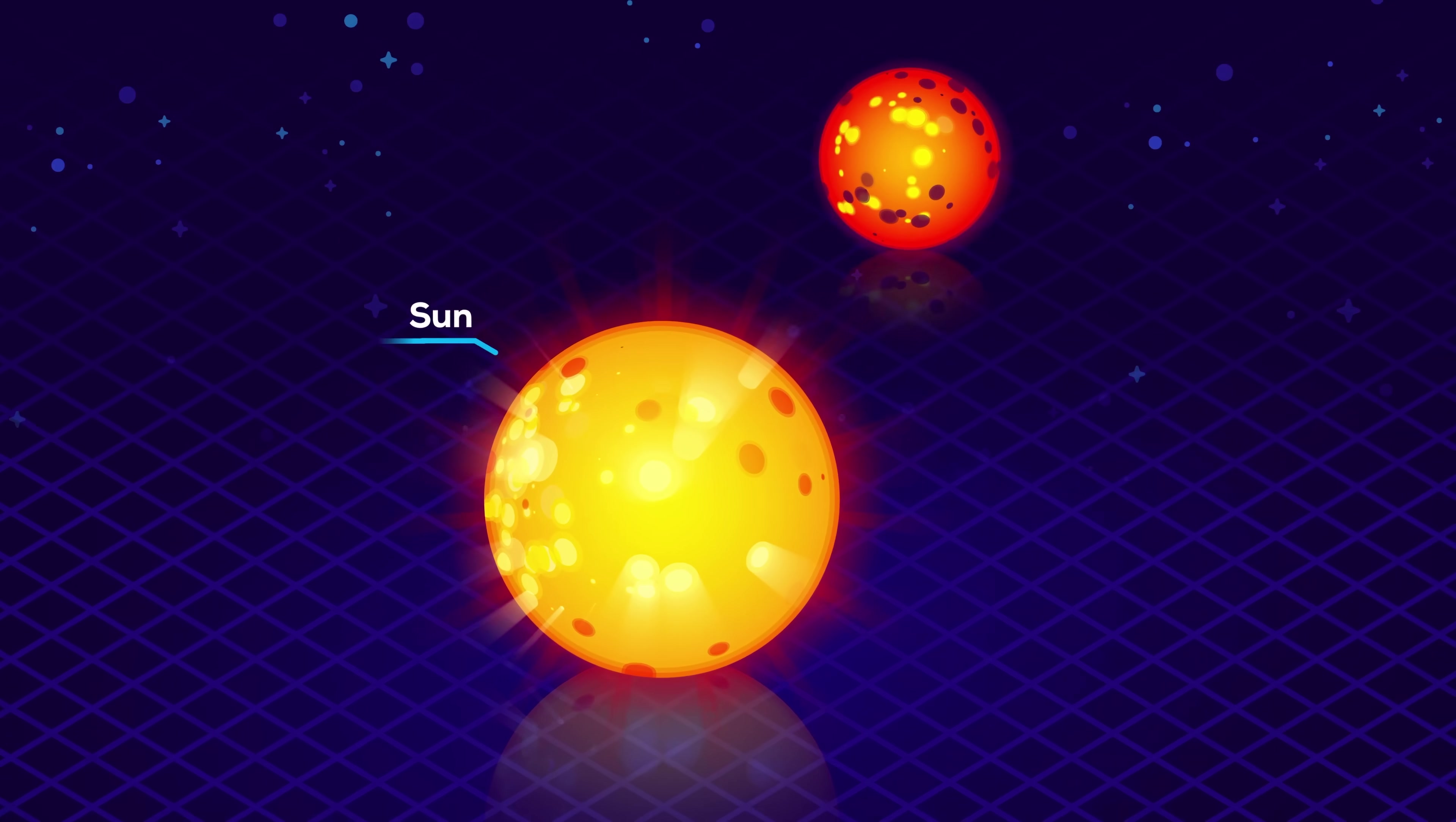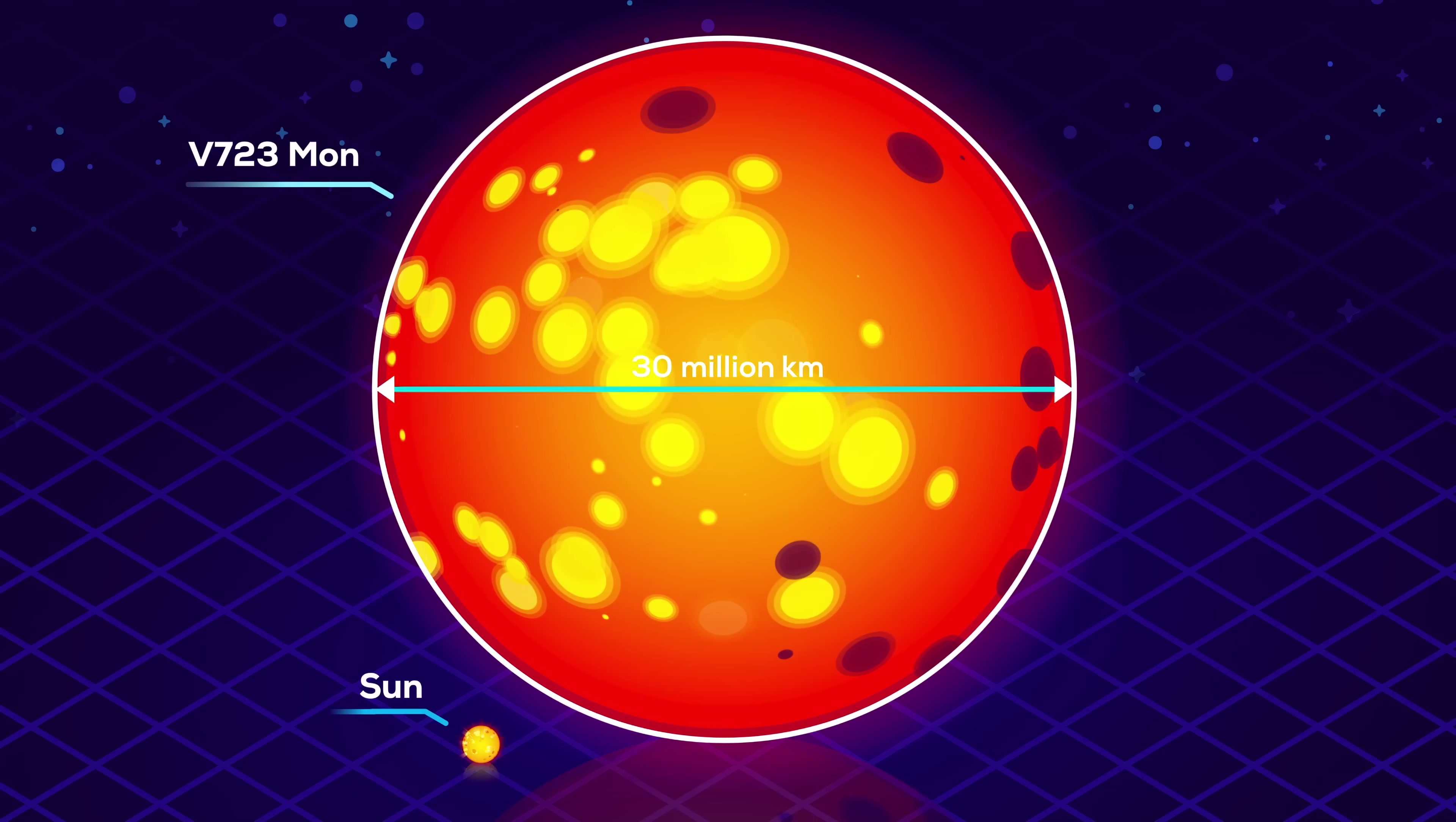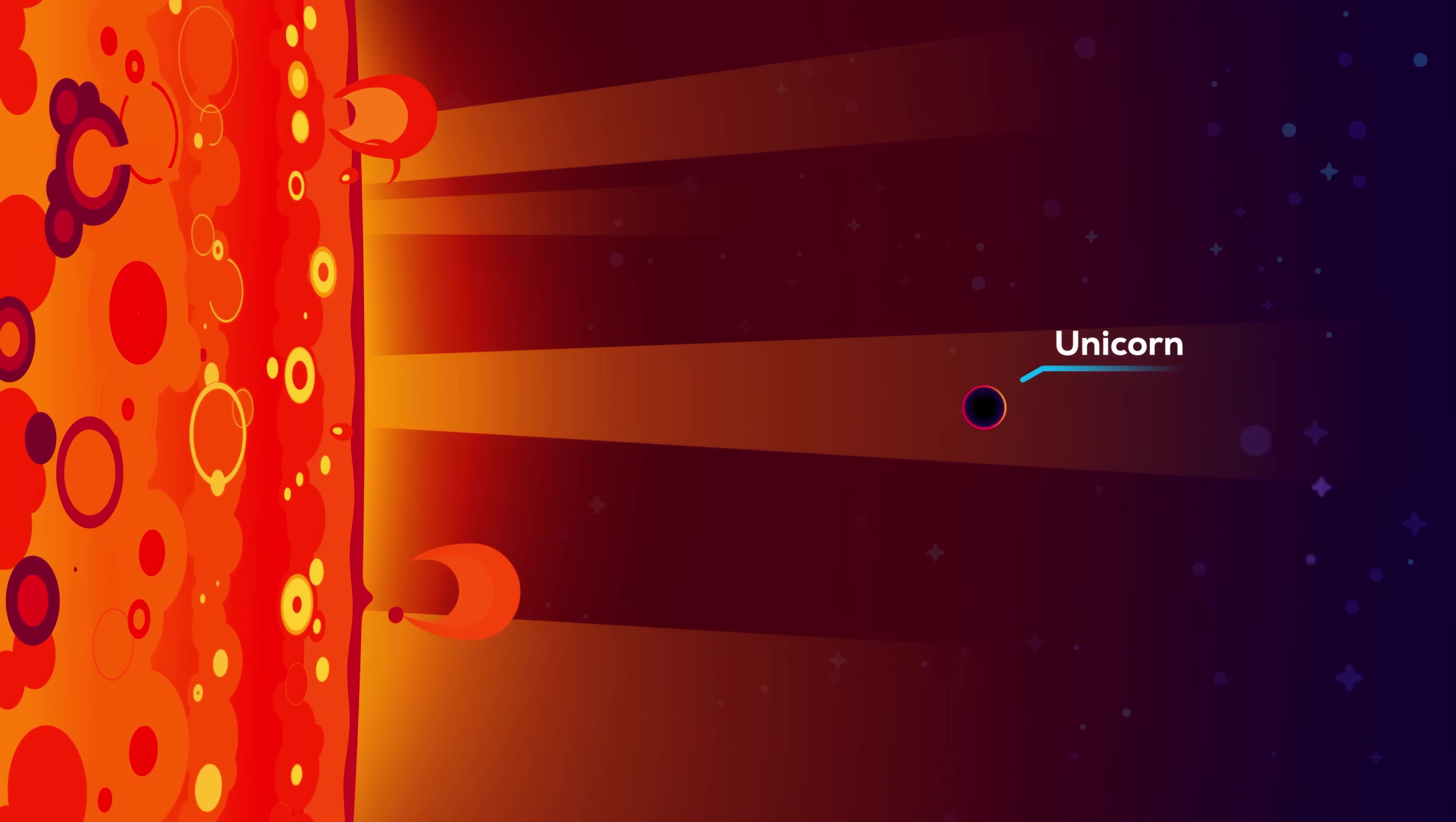Another lightweight black hole is the companion to the V723 Mon red giant star. This star is 24 times larger than our Sun, 30 million kilometers in diameter. And yet, it's thrown around by a tiny black hole just 17.2 kilometers wide. This tiny thing bullying the star is so much smaller that we can barely even show them in comparison.